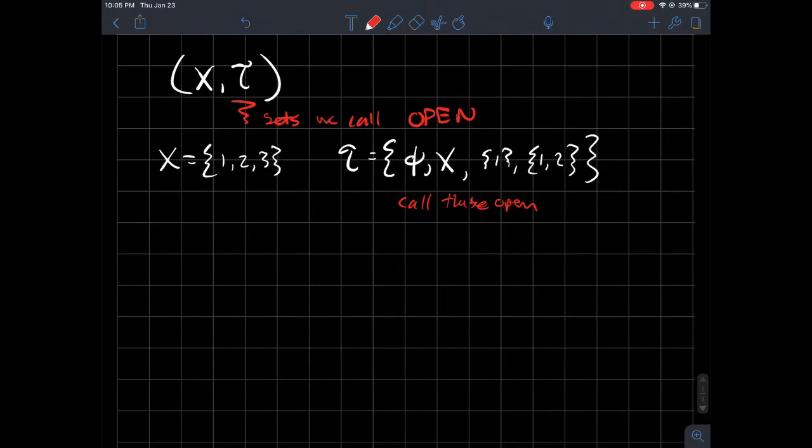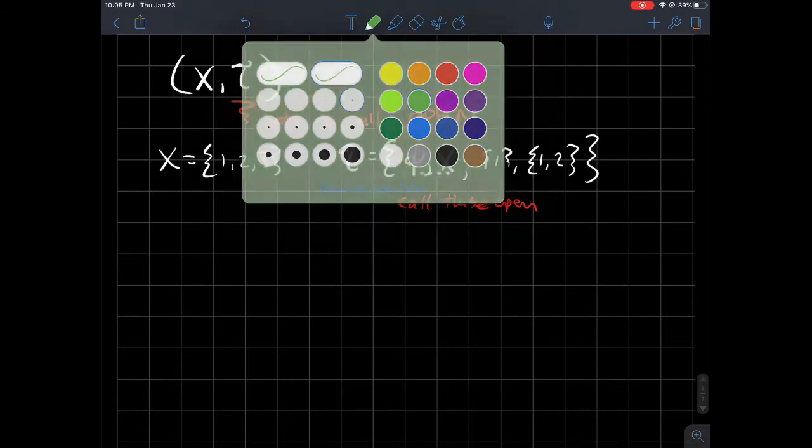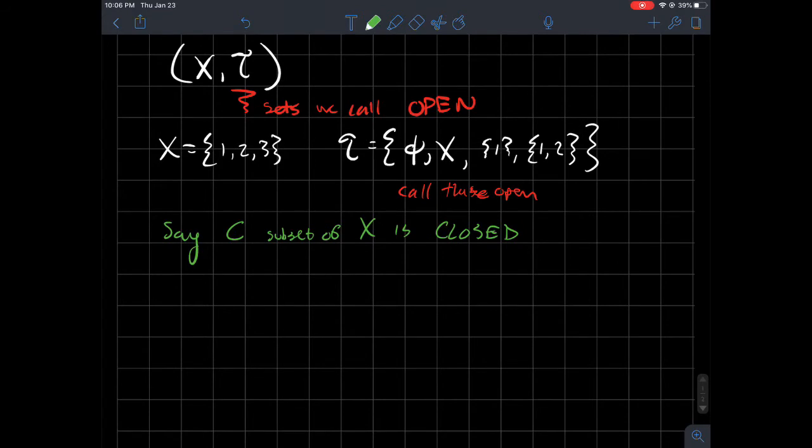What we're going to do now is define a new concept that's called closed. And so let me say, let me set, C is closed. So maybe also, I should say it this way. Where does C live? So I'm assuming C is a subset of this X that I've already defined. So we say C, subset of X is closed if its complement is open. Or another way to say that, if it's the complement of an open set.